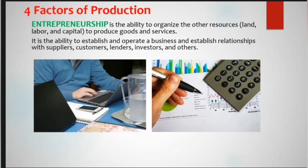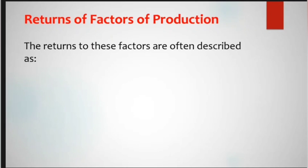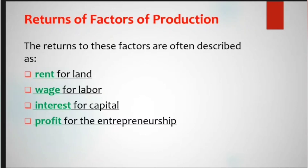Entrepreneurship is about the ability and willingness of a person to start a business. What are the returns of the four factors of production? The returns are: rent for land, wage for labor, interest for capital, and profit for entrepreneurship. This means the landowner receives rent, the worker receives a wage or salary, the owner of capital is entitled to interest, and lastly, profit or income for entrepreneurship.